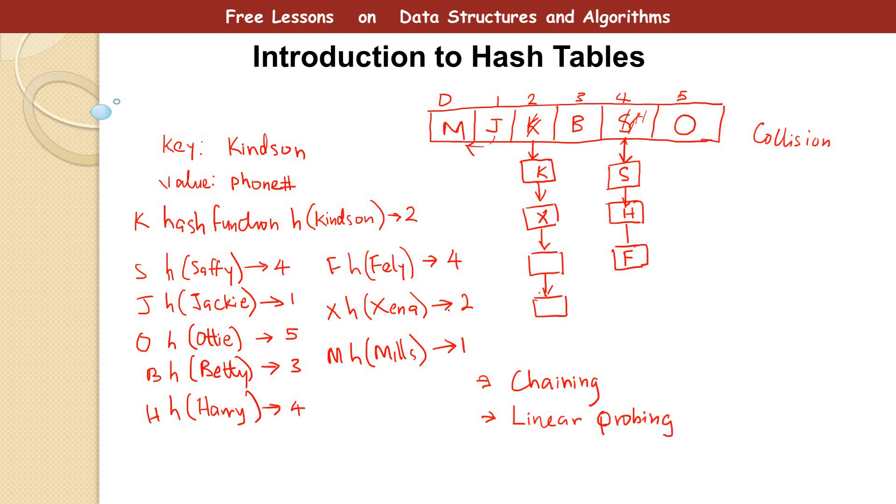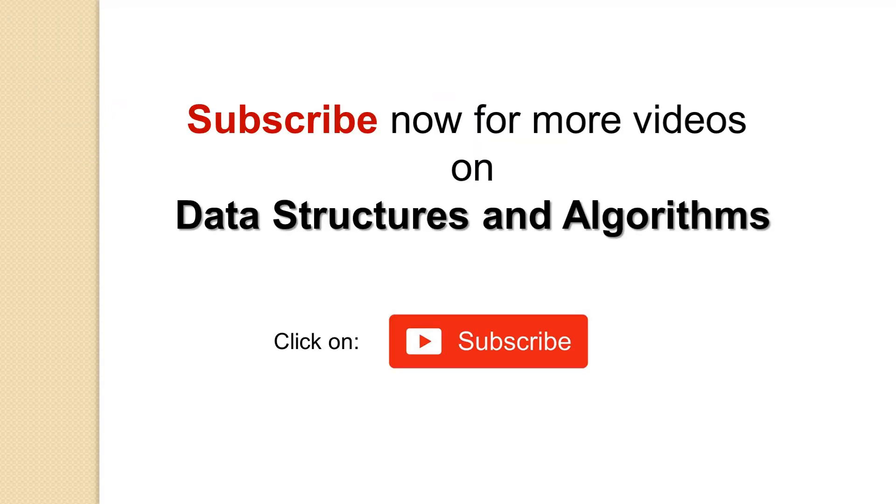So in subsequent tutorials I'm going to explain this more clearly, but basically this is how hash tables work and these are the two methods of handling collision in a hash table. I'd like to thank you for viewing. Remember to subscribe for more videos and also like this video if it's been informative for you.